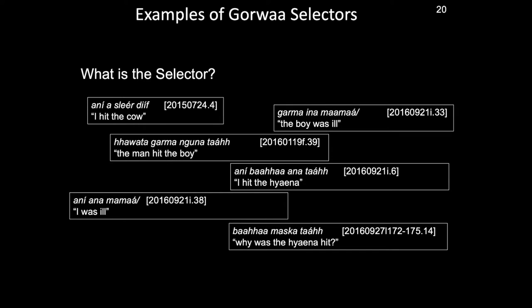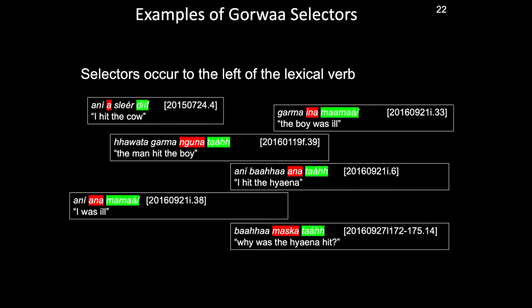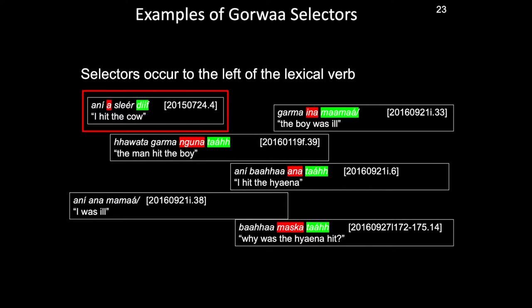Moving now to the main topic of my talk, I would like to specify the construction upon which I will be focusing — that is, the selector. In the simplest sense, as our colleague Martin Maus puts it, the selector, here highlighted in red, is an additional inflectional element that is separate from the verb. Selectors always occur to the left of the lexical verb, here highlighted in green, but not always immediately to the left. Sometimes other material, like nouns and adverbs, can intervene.